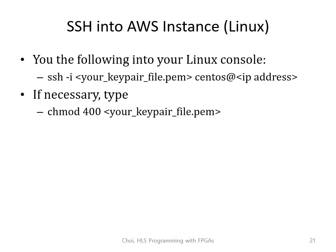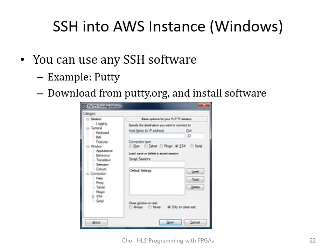Let's SSH into an AWS instance. If you're using Linux, you can log in with the command: ssh -i your_key_pair_filename centos@ip_address_of_the_instance. If you're using Ubuntu Linux, you need to change the ID to ubuntu. As of 2021, the FPGA developer AMI is on CentOS. If you get a complaint about an unprotected private key file, you can type chmod 400 your_key_pair_filename to make the key pair file read-only for yourself.